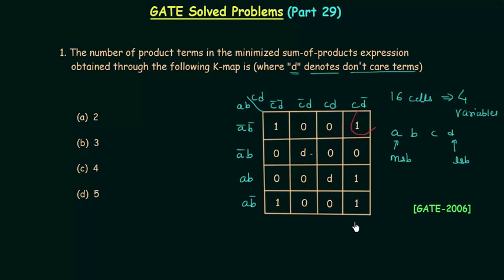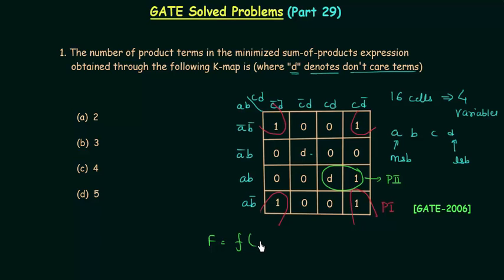I will first make the group of four ones — the four ones at the corners — and I will call it P1. In the second group, I will combine this one with this don't care. You can also combine this one with the other one, but I am combining it with this don't care and I will call it P2. Let's say the function is F of A, B, C and D, equal to P1 or P2, where P1 and P2 are the prime implicants.